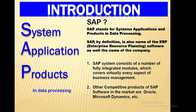SAP stands for Systems, Applications, and Products in Data Processing. By definition, SAP is also the name of the ERP (Enterprise Resource Planning) software as well as the name of the company. The SAP system consists of a number of fully integrated modules which cover virtually every aspect of business management. Other competitive products of SAP software in the market are Oracle, Microsoft Dynamics, etc.